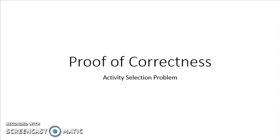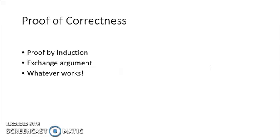In today's lecture we are going to study proof of correctness. This proof of correctness is to prove that the greedy algorithm we have come up with is correct and gives the optimal solution of the problem. We'll see what conditions a greedy algorithm has to satisfy to be correct, as there are many ways to prove the correctness of an algorithm.